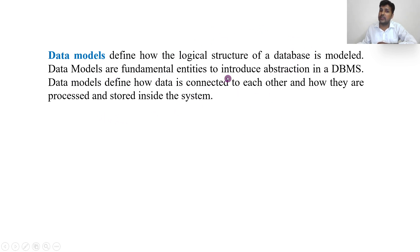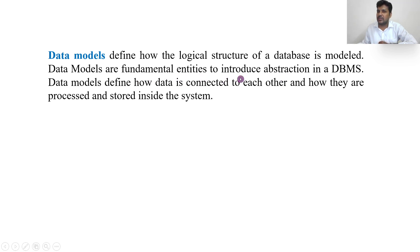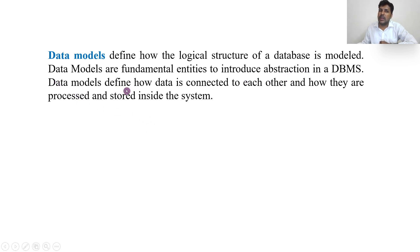Data models are fundamental entities to introduce data abstraction in DBMS. Data abstraction is nothing but hiding confidential data and showing only the data which is required to the user or client. So from these data models, we get the concept called data abstraction, where the client will be somewhere and the server will be somewhere, and not all data can be shown to the client — only the required information is shown. Data models also define how data is connected to each other and how it is processed and stored inside the system.